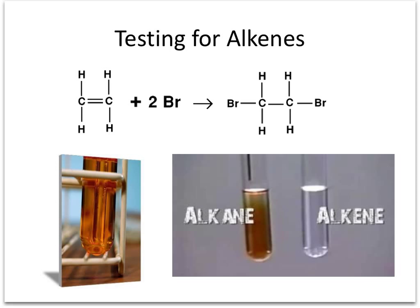Alkenes, on the other hand, being unsaturated and containing a double bond, can react with bromine. The bromine breaks that double bond and attaches itself to the carbon atoms, turning the resulting solution colourless or transparent. If you see your solution turn colourless when bromine water is added, then it must be an alkene. Otherwise, if it stays reddy-brown, it is an alkane.